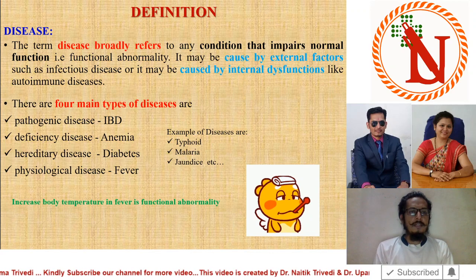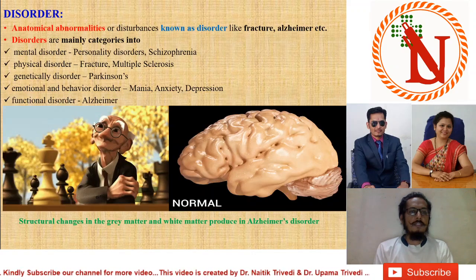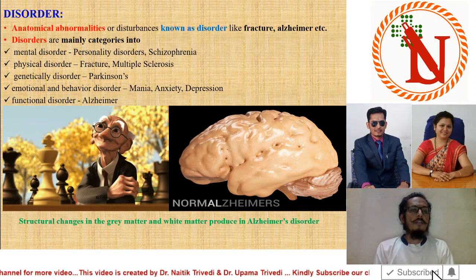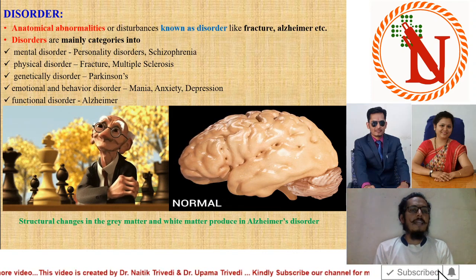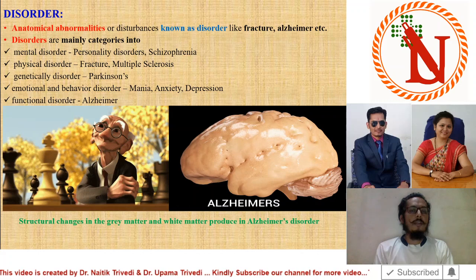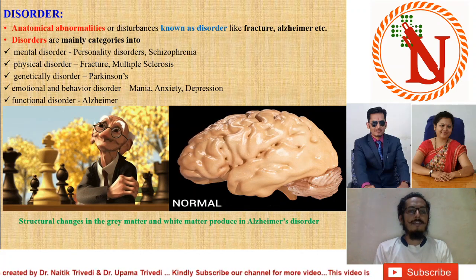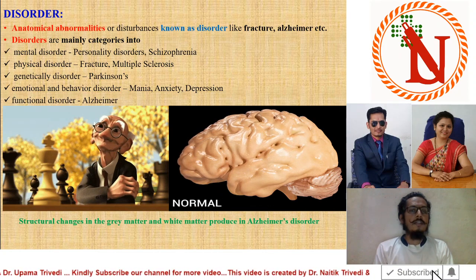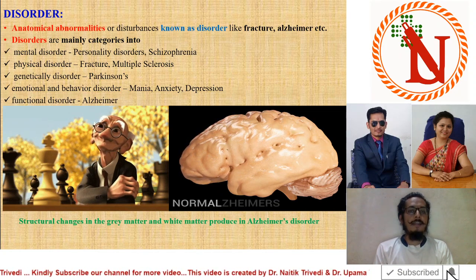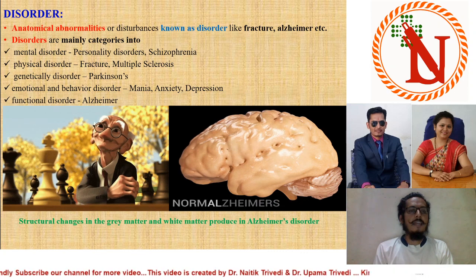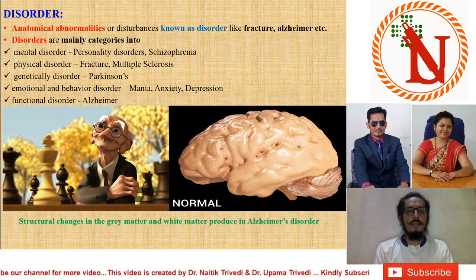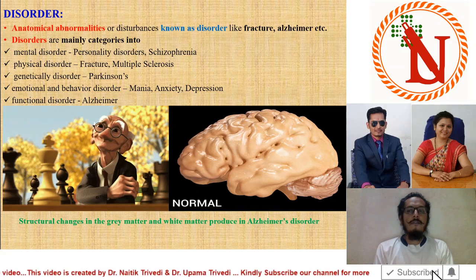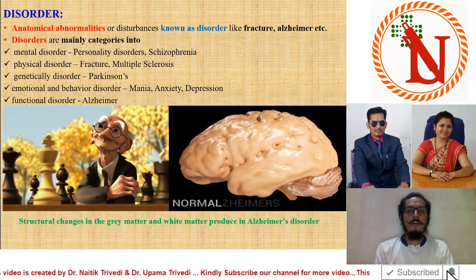Now the next definition: disorder. Disorder is an anatomical abnormality or disturbance. Remember — disease is functional abnormality while disorder is anatomical abnormality. Examples of disorder are fracture and Alzheimer's.